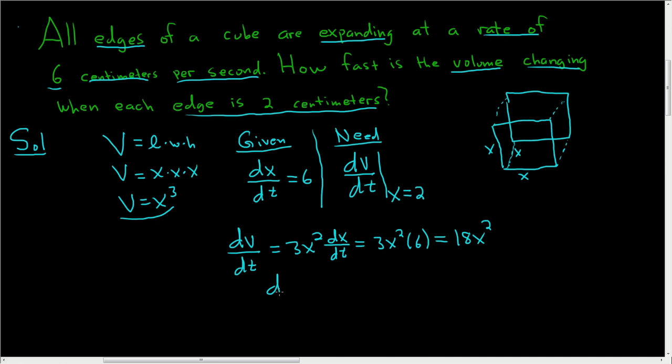But we need dV/dt at the moment in time when the edges are 2 centimeters. So we need dV/dt when x is equal to 2. So we just replace x with 2. And so we get 18 times 4, which is 72.